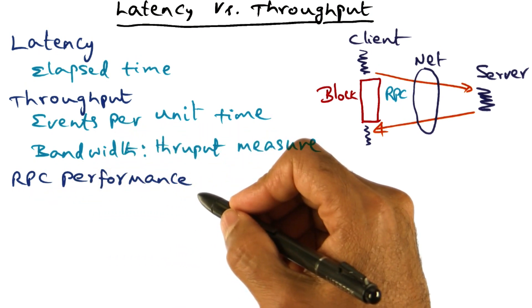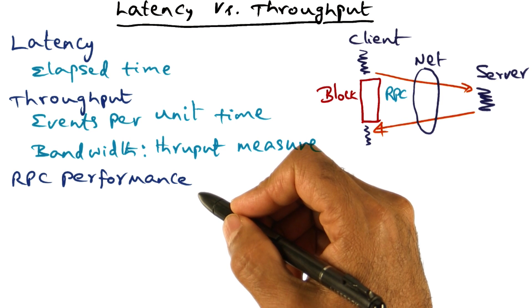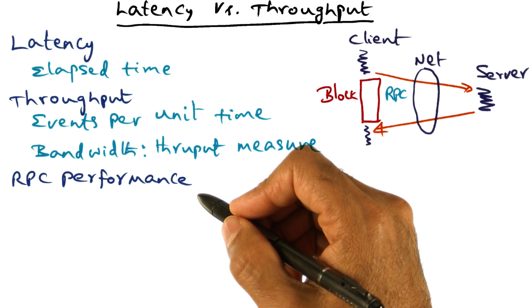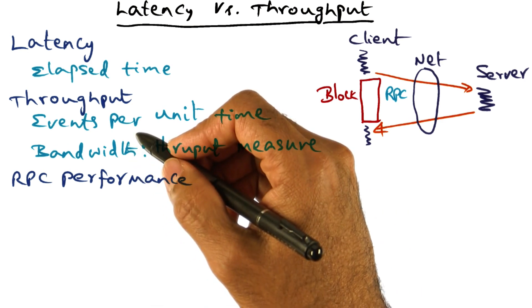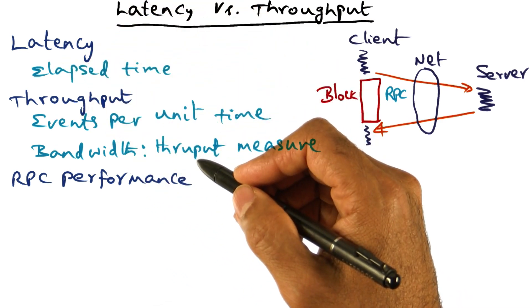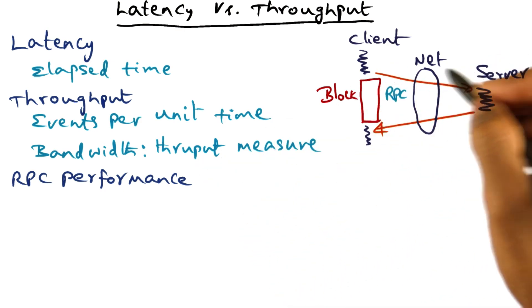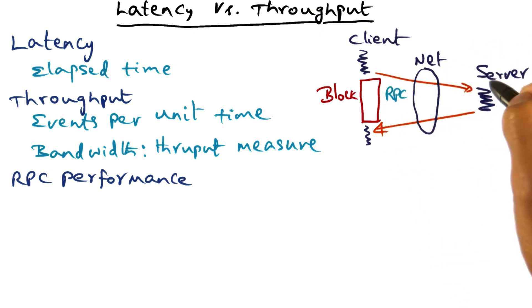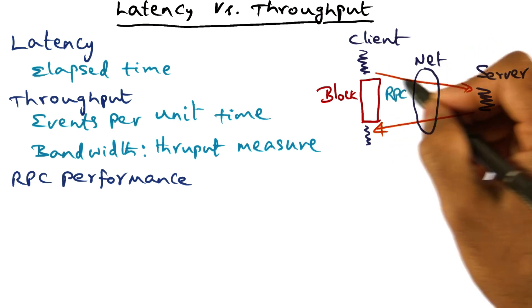RPC is the basis for client server based distributed systems, and performance of RPC is crucial. Specifically, in the context of this lesson, latency refers to the time it takes for an application generated message to reach its destination. For instance, if you're doing an RPC call from a client to the server, then the RPC call entails sending the arguments from the client to the server.